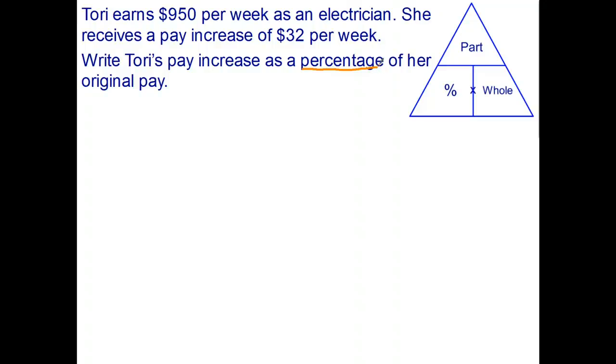So in this case, we're trying to find what percent $32 is out of the original price. Using our percent triangle, percent equals part divided by whole. So let's write down our formula.